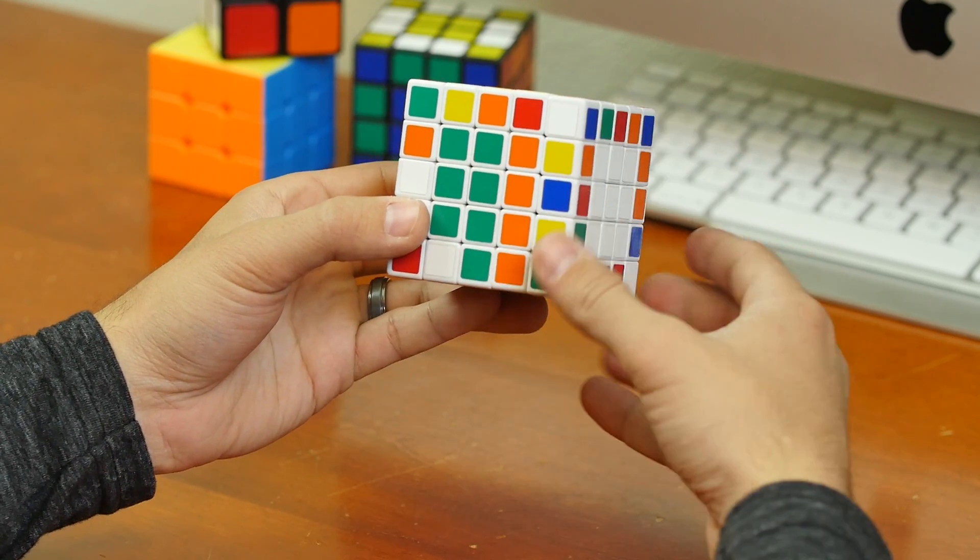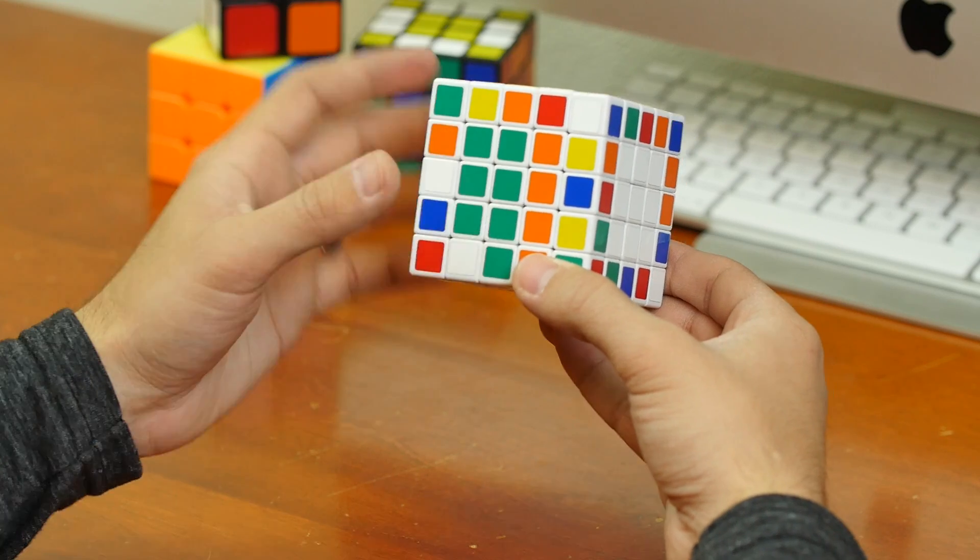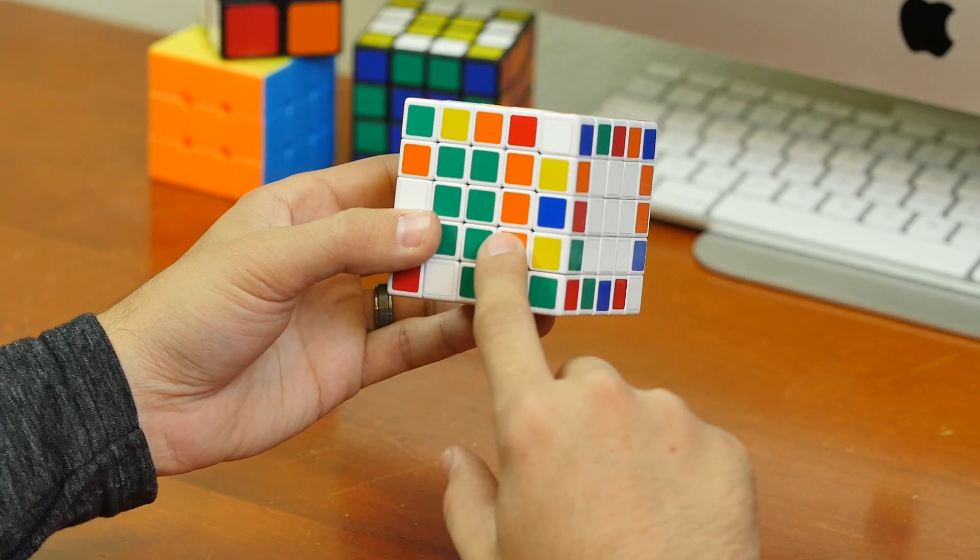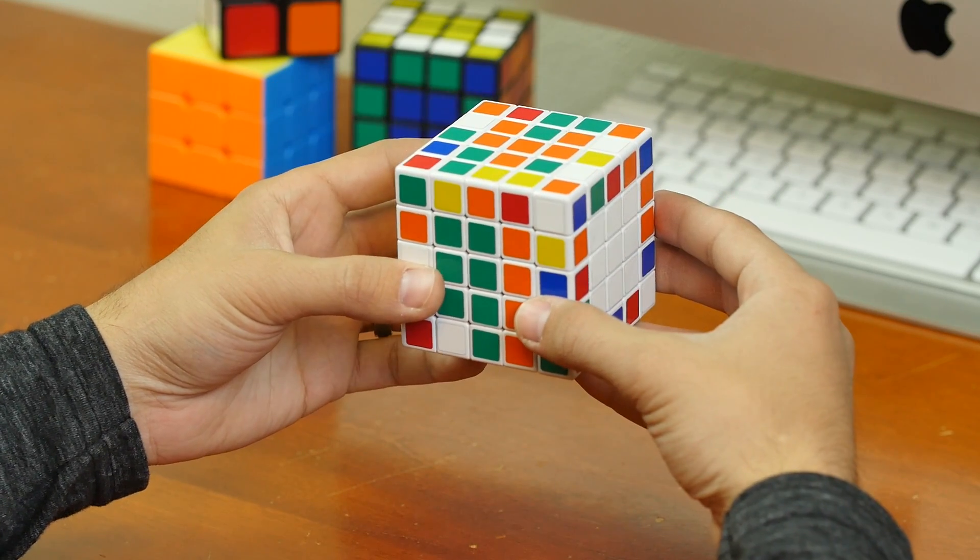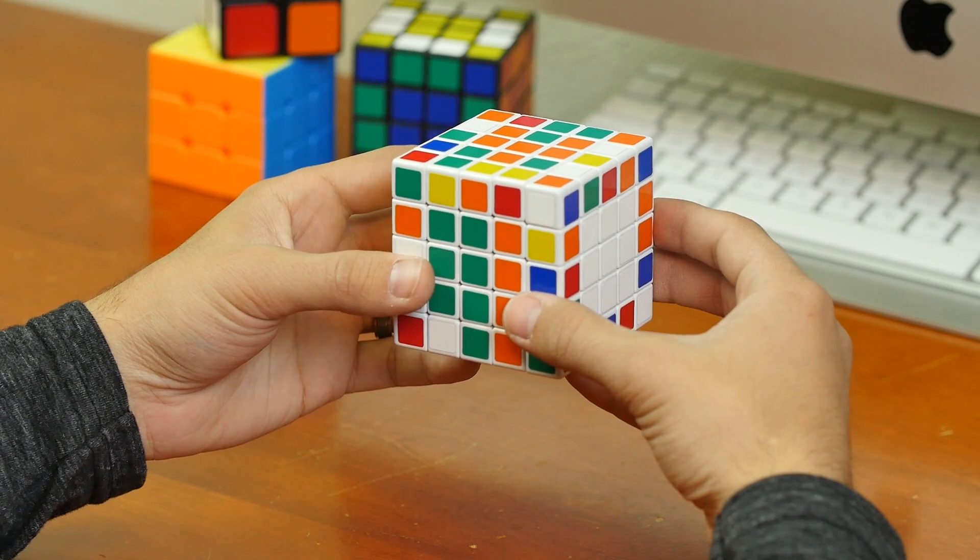And then on the green side, we have six green pieces right here, and then on the right side, we have three orange pieces. If your pattern looks like this, you can go ahead and do this move.